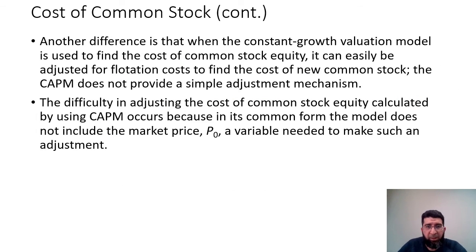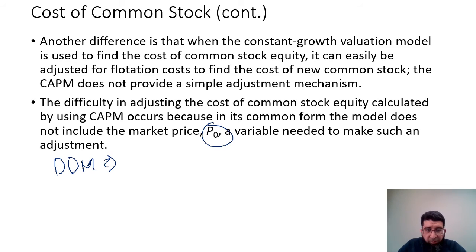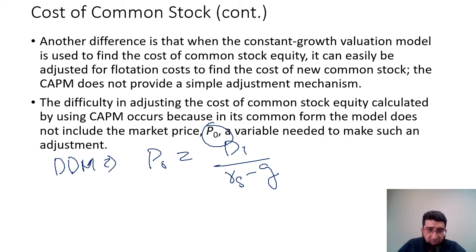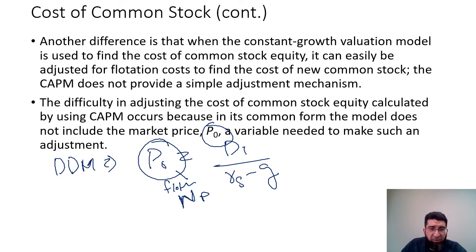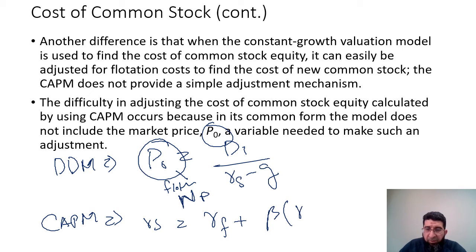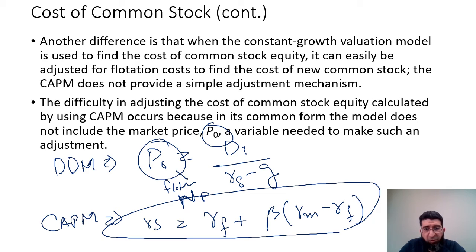Why do they differ? The dividend discount model has a price factor — P0 equals dividend divided by RS minus G — from which flotation costs can be deducted to get net proceeds. However, in the CAPM equation RS equals RF plus beta times (RM minus RF), there is no price factor, making it difficult to incorporate flotation costs into CAPM.